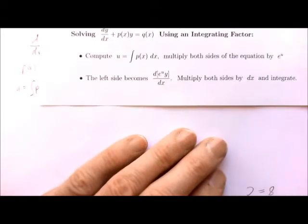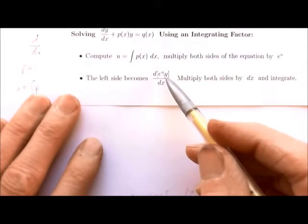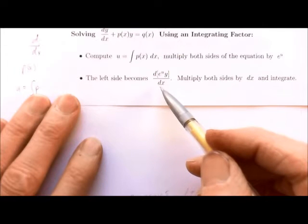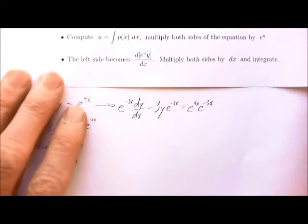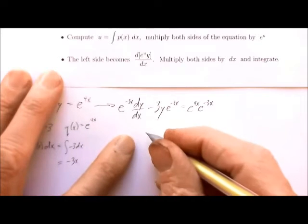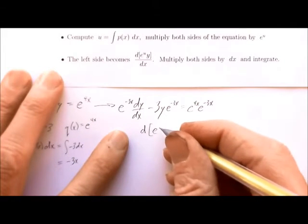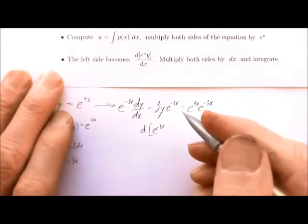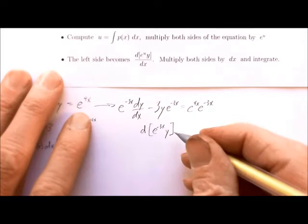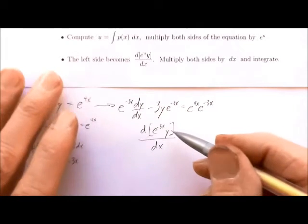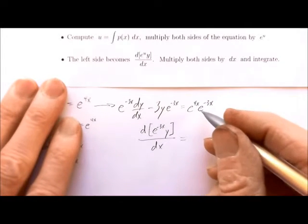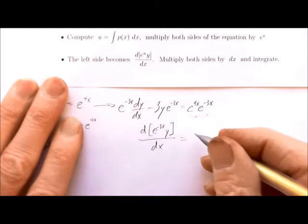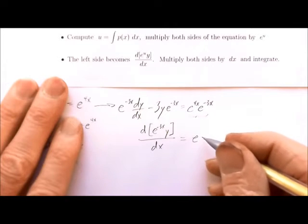The next thing our directions tell us is that the left side becomes the derivative of e^u · y with respect to x. So the left side becomes d/dx of [e^(−3x) · y]. The reason for this is covered in class and in section 3.3 of the book. The right-hand side stays as is — in this case we can simplify by adding the exponents, so e^(4x) · e^(−3x) becomes e^x.